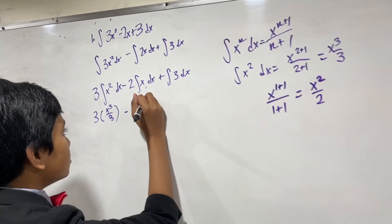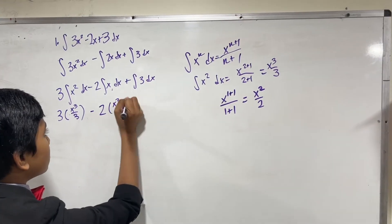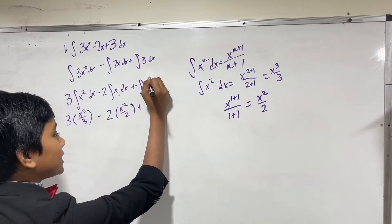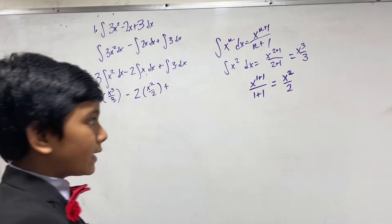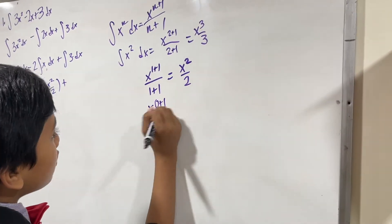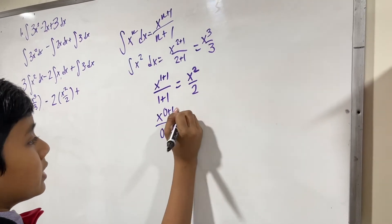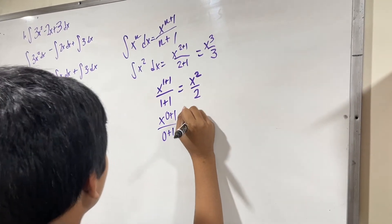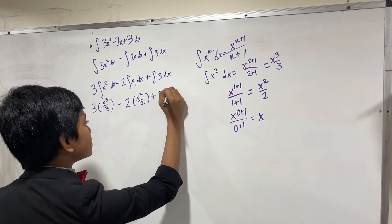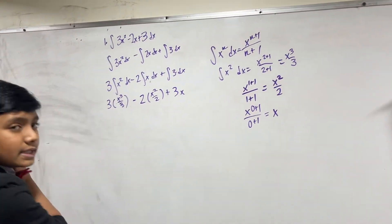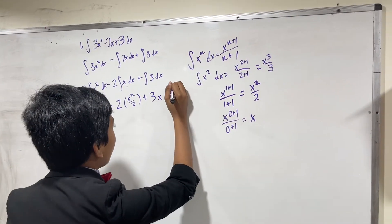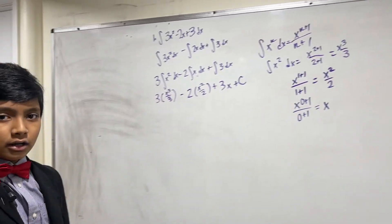2 times x squared over 2, plus 3 — and this is technically x to the 0. So doing that same rule over again, x to the 0 plus 1 over 0 plus 1, so that's equal to x, just 3 times x. And remember, since there was an integral, all we have to do is tack on a plus C.